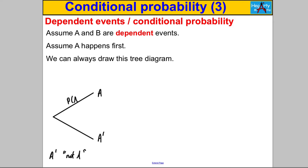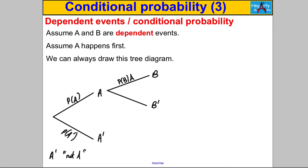Let's label the probabilities. This here is the probability that A happens, and this here is the probability that A doesn't happen. Now after A happens, B happens afterwards — so looking at the scenario where A has happened, this here is the outcome that B happens after it, or B doesn't happen. This probability is the probability that B happens given A has happened, and this one is the probability that B doesn't happen given A has happened.